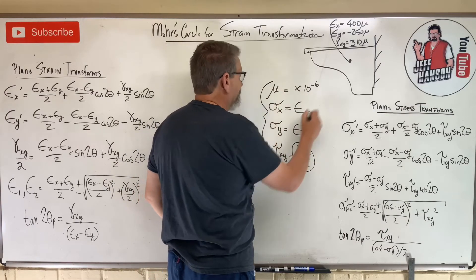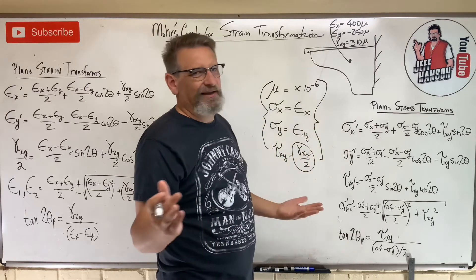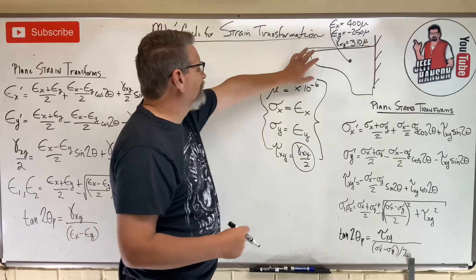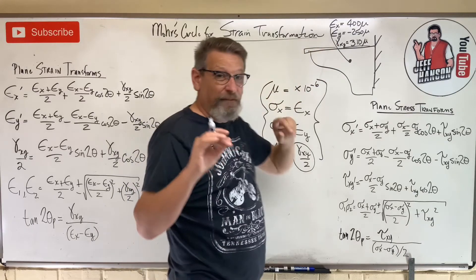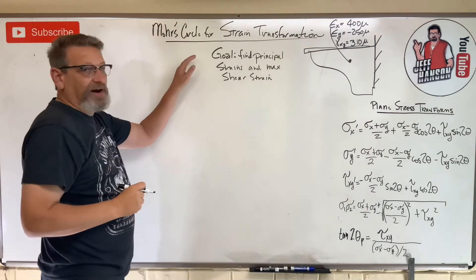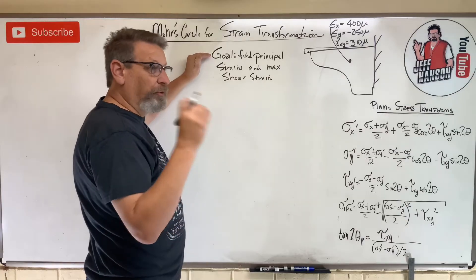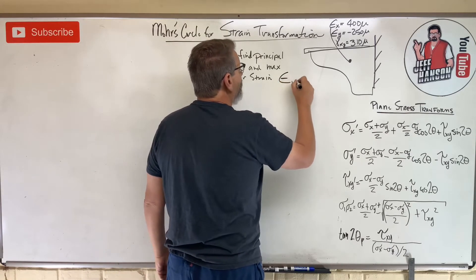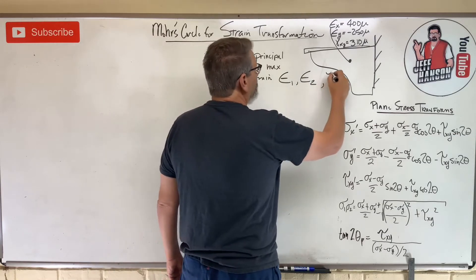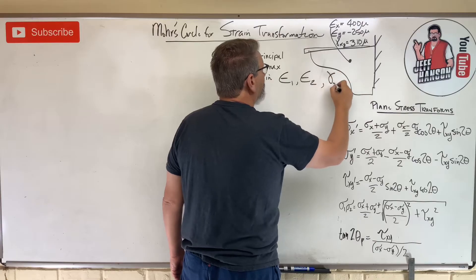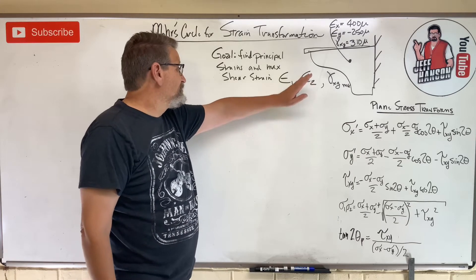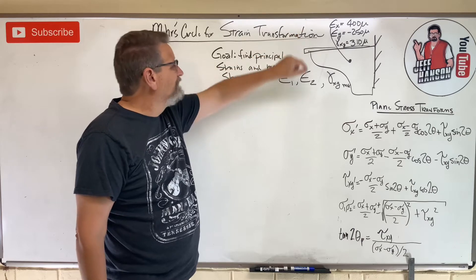Positive strain means it's stretching in tension; negative means it's changing length in compression. Those are all the ways they'll try to trick you on a test, but now you know. We're going to find the principal strains epsilon_1 and epsilon_2, and the maximum shear strain. Let's erase the equations and work Mohr's Circle over here.